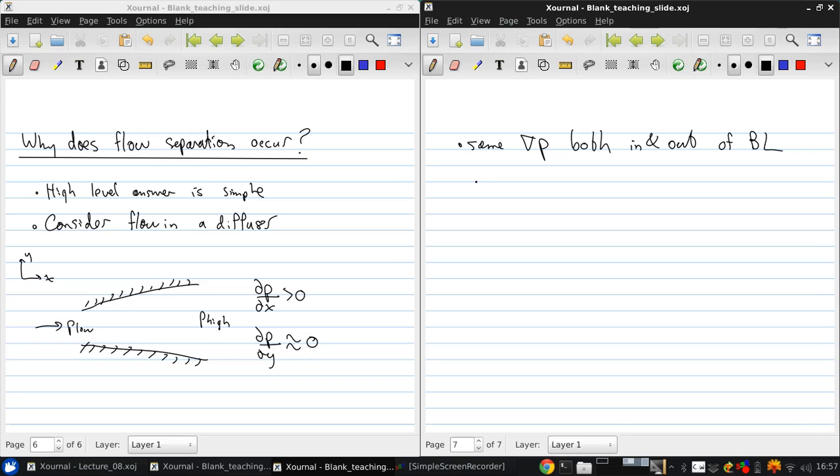Outside the boundary layer, the fact that the flow is slowing down due to the adverse pressure gradient is no problem. But if we have a close look inside the boundary layer, there's a very good illustration of this. I'll sketch something similar here. Here's the wall. This is the bottom wall of the diffuser, and here's the boundary layer edge.